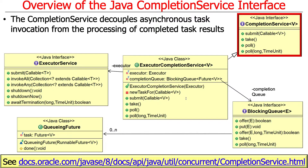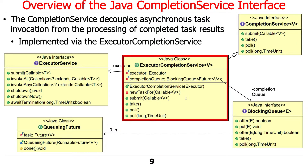The completion service is an interface. As you can see, it's got a very simple interface — basically submit, take, poll, and a couple of versions of poll. A completion service is an interface implemented by various things. There's a default implementation called the Executor Completion Service, which you could use out of the box — and it works quite well — though you could make your own if you wanted to.